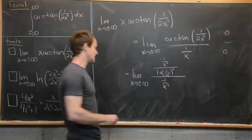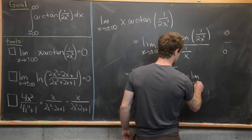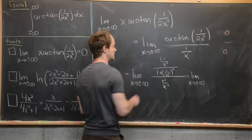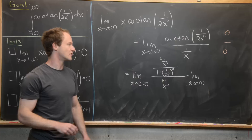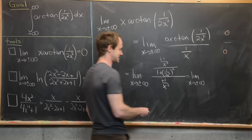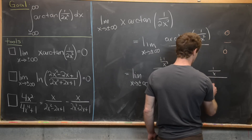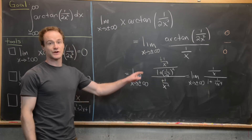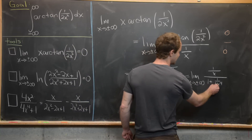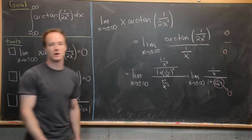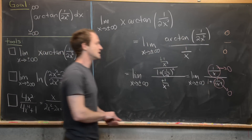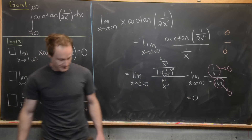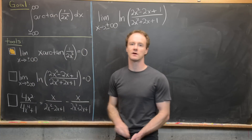After simplification, the minus signs cancel and we swing x² up to get 1/x in the numerator over 1 + 1/(4x⁴) in the denominator. As x→±∞, 1/(4x⁴) approaches zero and 1/x approaches zero, so the numerator goes to zero and the denominator goes to one. Therefore the whole limit is zero — the first tool is established.